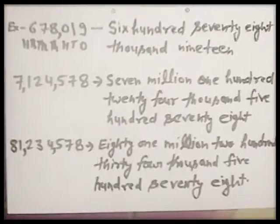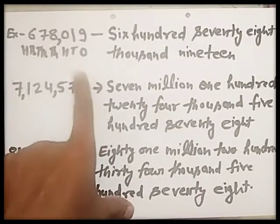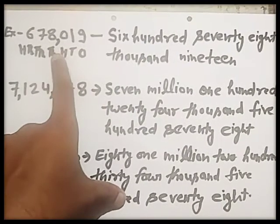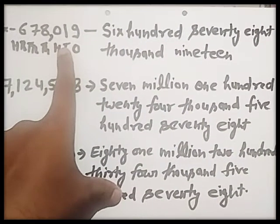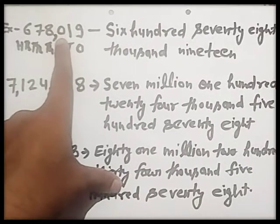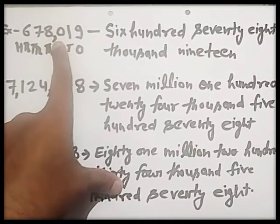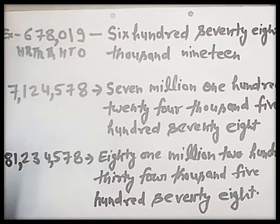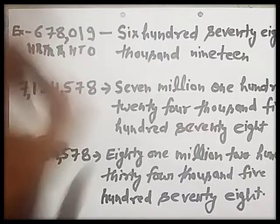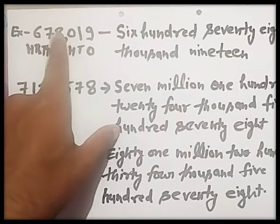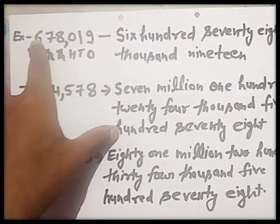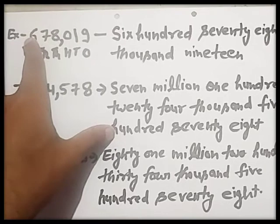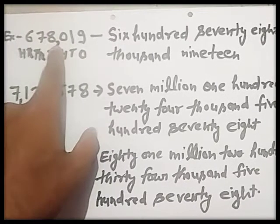Now see the example. The first example is 678019. You can use a comma, but after every 3 digits. Count from right to left: 1, 2, 3 — then 1, 2, 3. There is no millions place, so use only one comma.